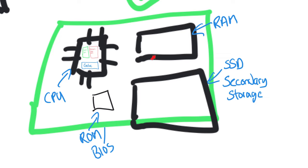The ROM will say 'okay, operating system exists here.' Now it won't fetch instructions directly from secondary storage because secondary storage is really slow. That's what it means when it says 'loading' — loading means it's moving data from secondary storage into RAM. Once it's copied over, then it will fetch, decode, and execute from RAM. The frequently used instructions will be kept in cache, it will decode in the control unit, execute in the arithmetic logic unit, and this will keep cycling millions if not billions of times every single second.